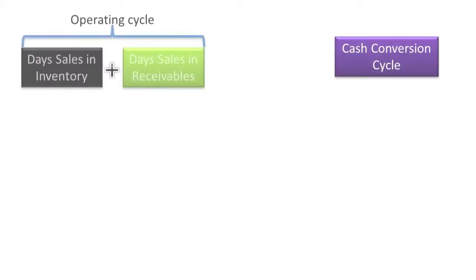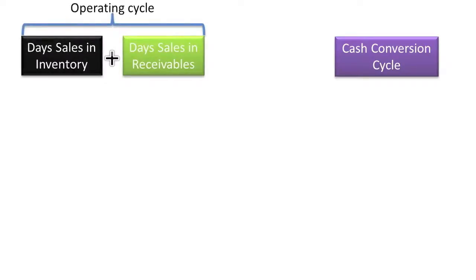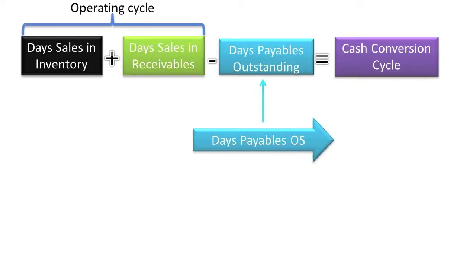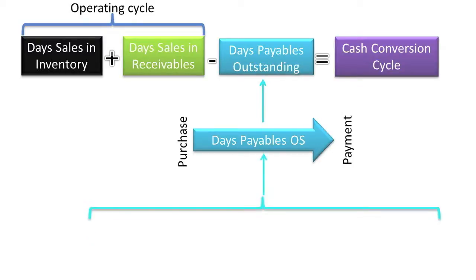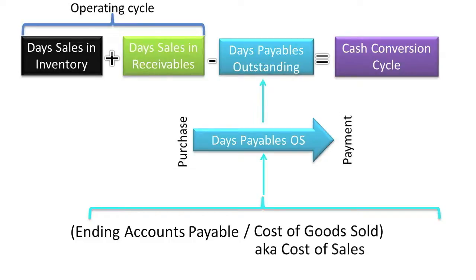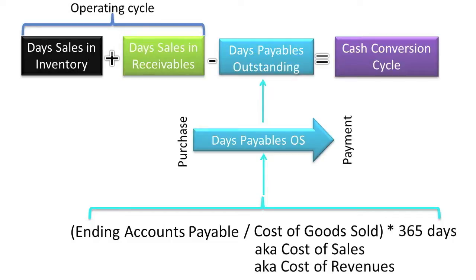The Cash Conversion Cycle is computed by taking the company's operating cycle and deducting from it its Days Payables Outstanding. The Days Payables Outstanding figure represents the number of days between when a company purchases inventory and when it pays off the related accounts payable. Assuming you are computing it for a full year, Days Payables Outstanding is computed as: ending accounts payable divided by cost of goods sold (also known as cost of sales or cost of revenues), times 365 days.